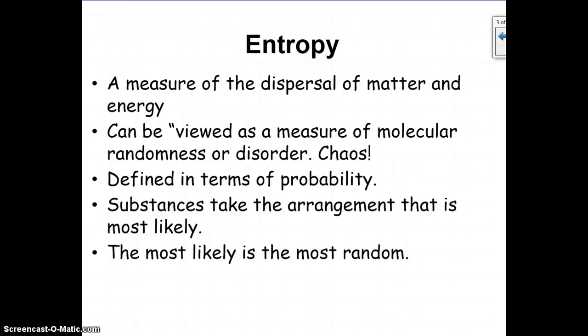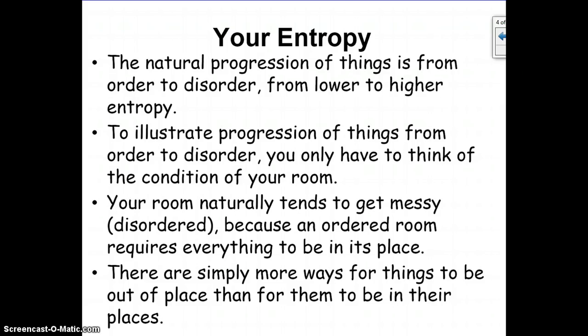It's basically a measure of the dispersal of matter and energy. It can be viewed as a measure of molecular randomness or disorder, in other words, chaos. It's defined in terms of probability, and basically we're talking about the substances taking the arrangement that is most likely, and the most likely is always the most random. So basically we're talking about how random, how chaotic it is. Naturally, things are going to go from order to disorder, or from lower to higher entropy.